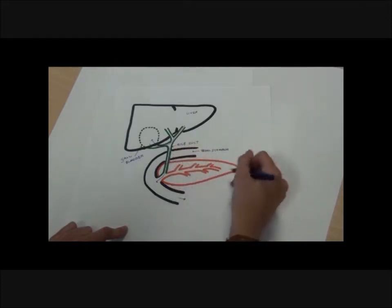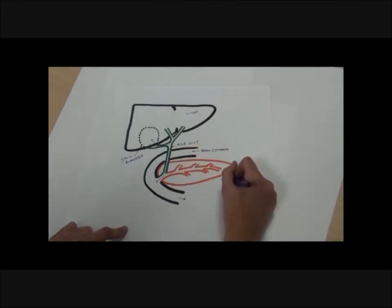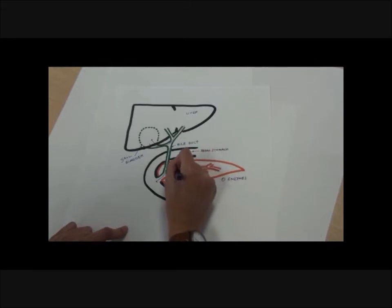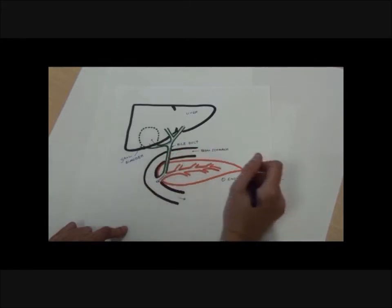Now the pancreas has two functions. Firstly, it produces pancreatic enzymes. These are fed into a main pancreatic duct, join onto the bile duct and are also fed into the small intestine. These are responsible for breakdown of carbohydrates, proteins and lipids.